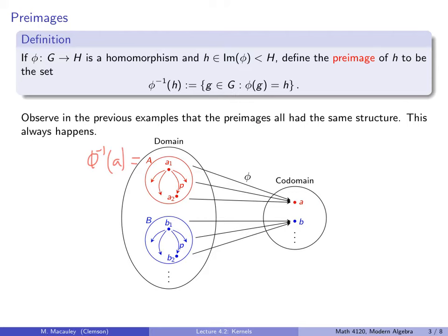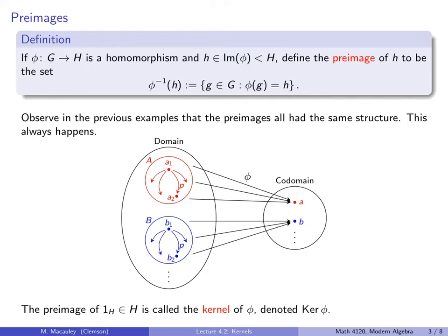The preimages of all elements have the same structure. In this cartoon, the preimage of elements, if we were to draw them in the Cayley diagram, would have the same structure. And here's one more definition: the preimage of the identity element is called the kernel of the map, denoted ker(phi). If you are in linear algebra, you might call this the null space, but we usually call it the kernel in group theory. It is the set of all elements that get mapped to the identity.